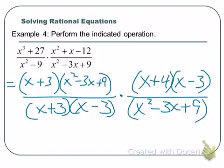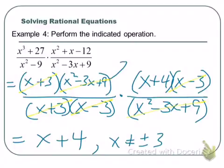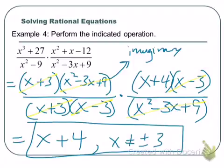What can we cancel? The x plus 3s can cancel, the x minus 3s can cancel, and the trinomial factor x squared minus 3x plus 9 can cancel also. So we're just left with x plus 4. What are the excluded values? x cannot be plus or minus 3. So our answer is x plus 4, as long as x is not equal to plus or minus 3.